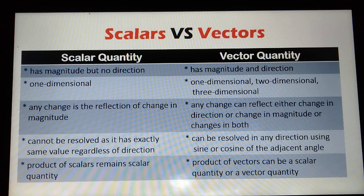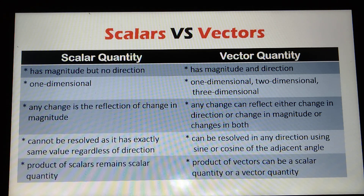This table shows the basic differences of scalars and vectors. Scalar quantity has magnitude but no direction, while vector quantity has magnitude and direction.